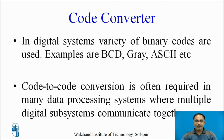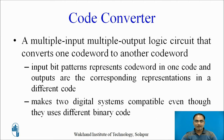In digital systems, a variety of binary codes are used — examples are BCD, GRAY, ASCII, etc. There is a need of code converters, which are often required in many digital processing systems where multiple digital systems communicate together. A multi-input multi-output logic circuit that converts one code word to another code is called a code converter, where input pattern represents a code word in one code and output patterns are corresponding representations in a different code. A code converter makes two digital systems compatible even though they use different binary codes.